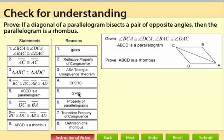And then finally you can conclude that ABCD is a rhombus by the definition of a rhombus, because we have four congruent sides on our parallelogram.